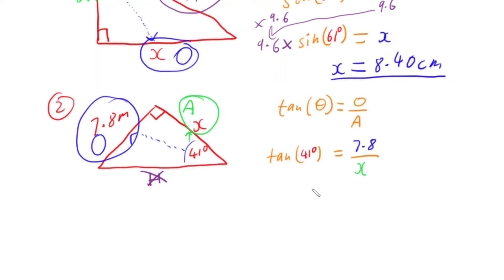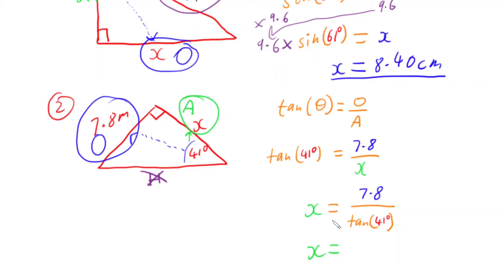Most people just shortcut this to one step: X moves over to one side, and tan of 41 degrees moves underneath to become the denominator, so we get 7.8 divided by tan of 41 degrees. Plugging this into the calculator, X is about 8.97 metres. So that's two examples — one using sine and one using tan.